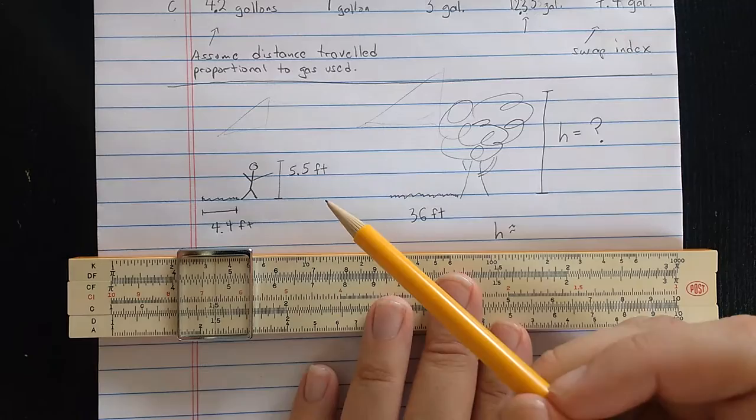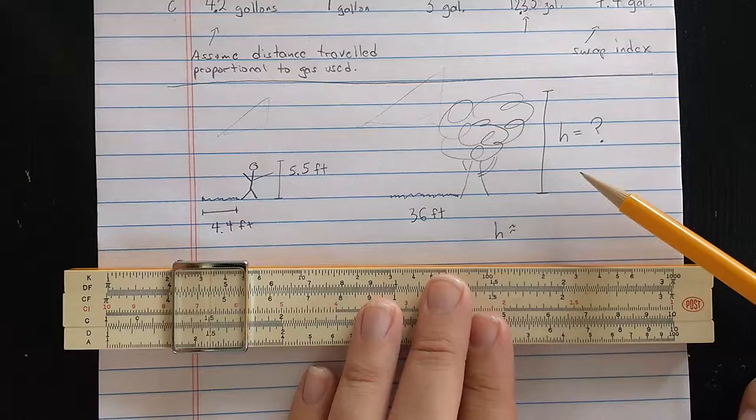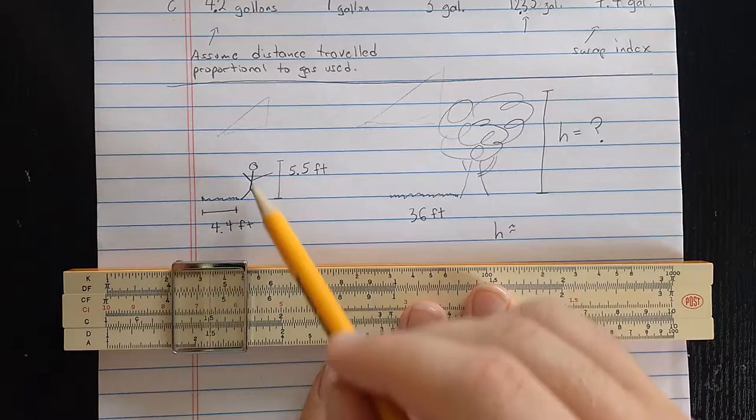Let's solve a second proportion problem. This is involving right triangles. Let's say I have a man who is 5.5 feet tall, and he's casting a 4.4 foot shadow. He measures the shadow of a tree to be 36 feet. What is the height of the tree?